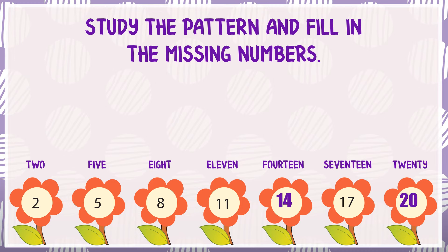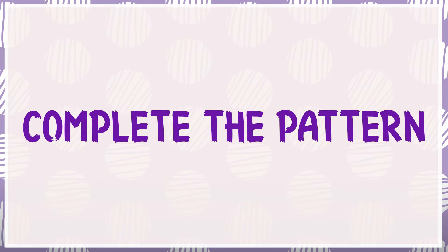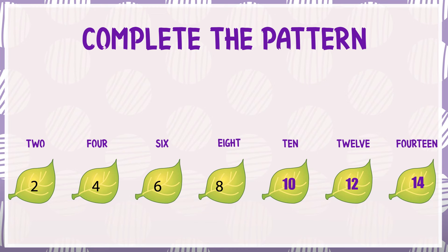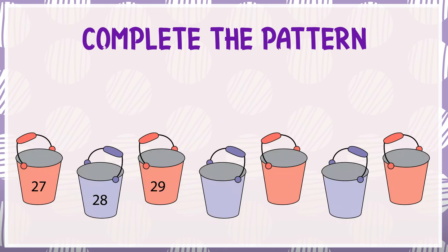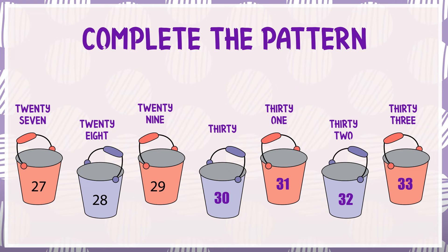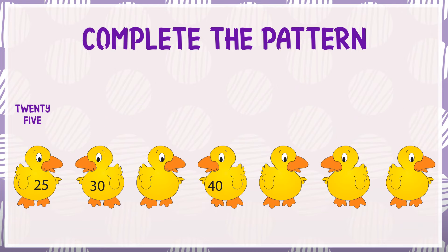Complete the pattern: 2, 4, 6, 8. So what will be the next missing number? 10, 12, 14. 27, 28, 29. So what will be the next missing number? 30, 31, 32, 33. 25, 30. So what will be the next missing number? 35.